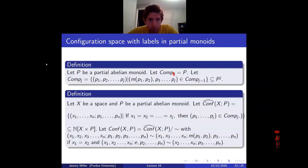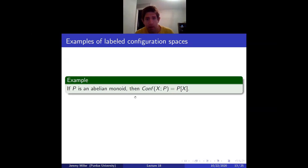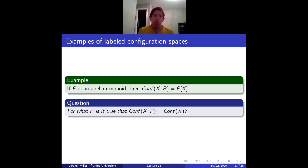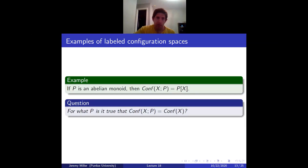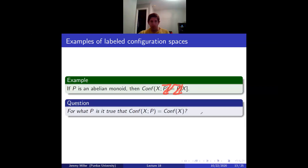If P is an abelian monoid, the configuration space of points in X with labels in P is just what we were calling P(X) before. To recover the usual configuration space of distinct unordered points in X, we should pick P = S^0 = {0, 1} where 0 is the unit.